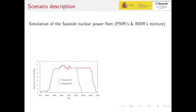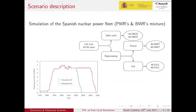The reference scenario representing a country with a medium-sized nuclear reactor fleet chosen for the calculations is the Spanish one. It covers multiple technologies — pressurized water reactors and boiling water reactors — and starts its operation in the 1970s with a design lifetime of 40 years, providing nowadays around 20% of the electricity consumed in the country.